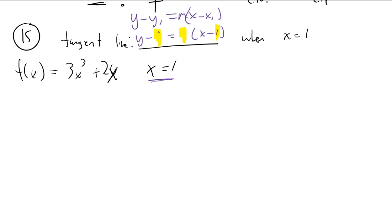What about the y value, though? How do we find that? Okay, plug it into what? If you want a point, you plug into the function. So, when x is 1, we get 3 plus 2, which is 5.